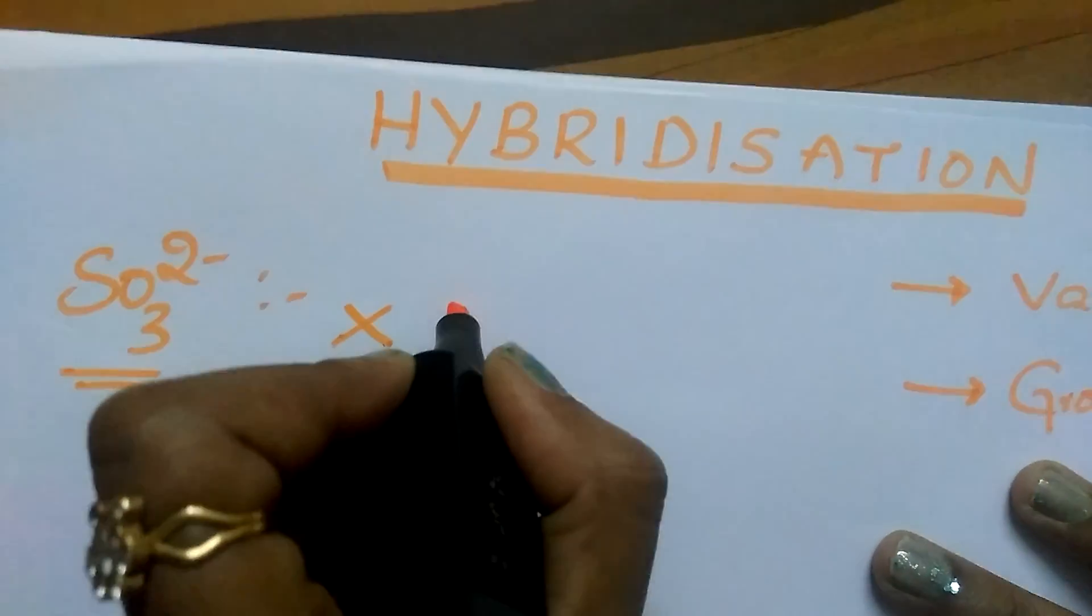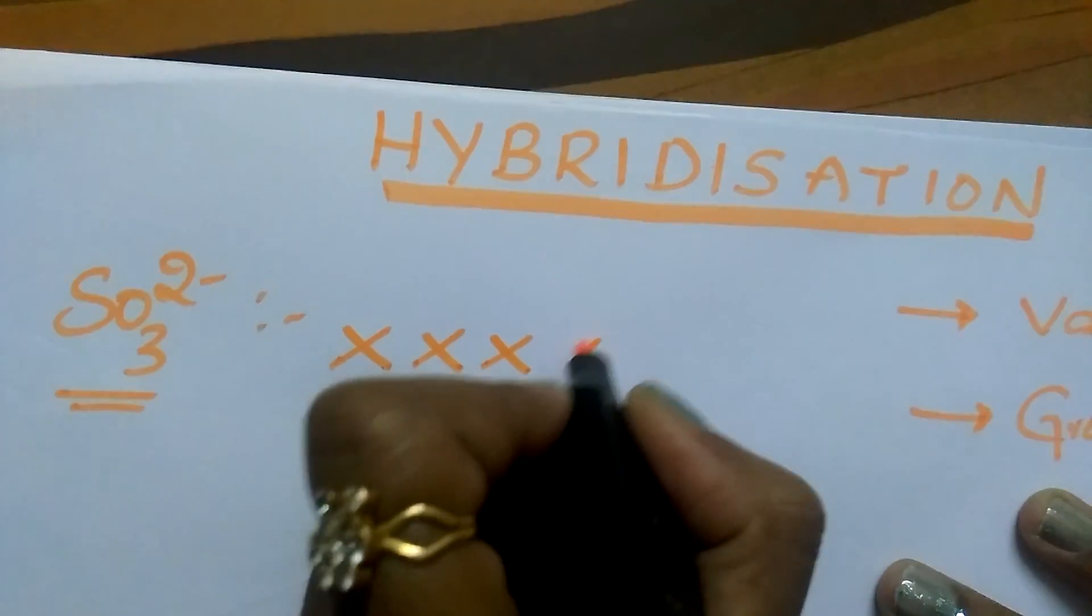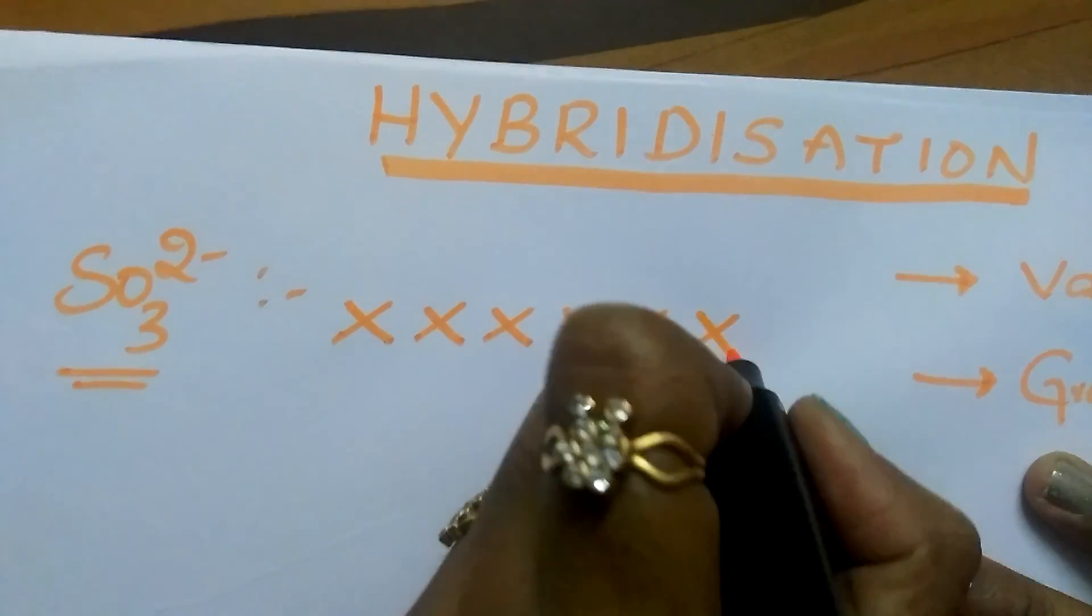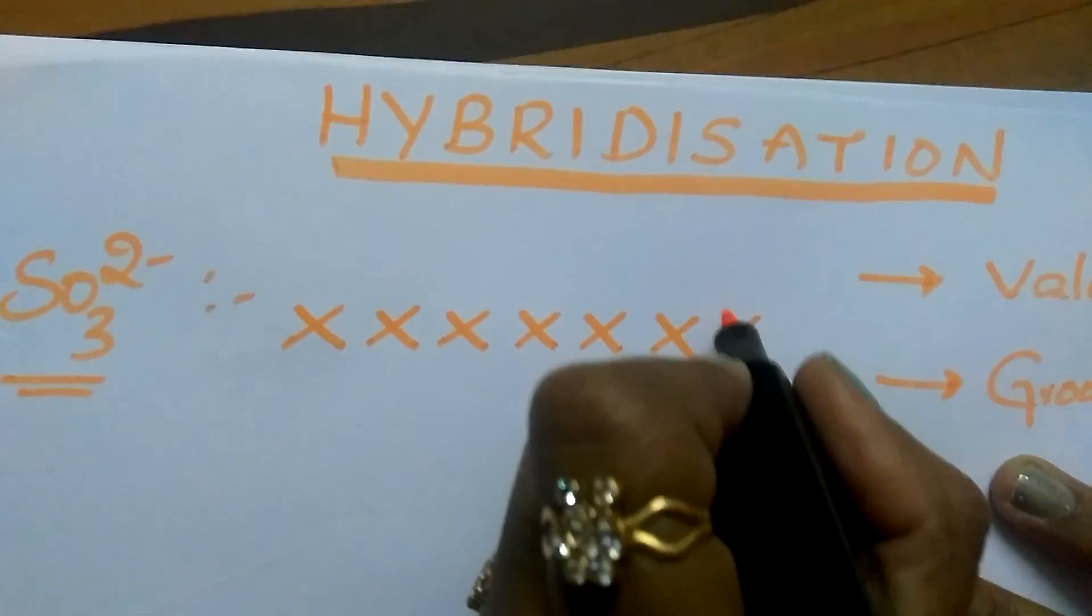Write the 6 electrons: 1, 2, 3, 4, 5, 6. It is having 2 minus charge, write 2.